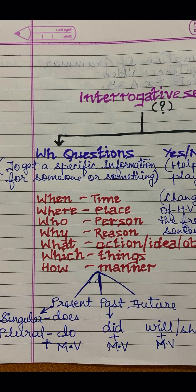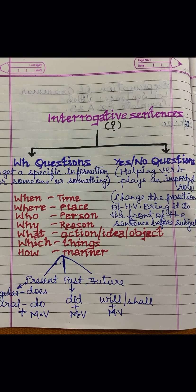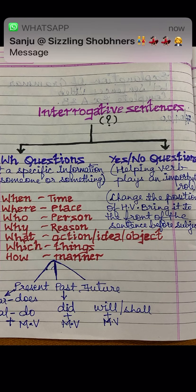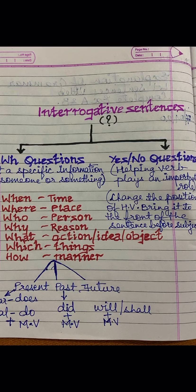The other way is YES or NO questions. These YES or NO questions are very easy, children. When we want to simply know the answer either in YES or NO, we form YES or NO questions. In a YES or NO question, the HELPING VERB plays the important role. The helping verbs are: IS, AM, ARE, WAS, WERE. You just have to change the position of the helping verb — bring it to the front of the subject and form a question.